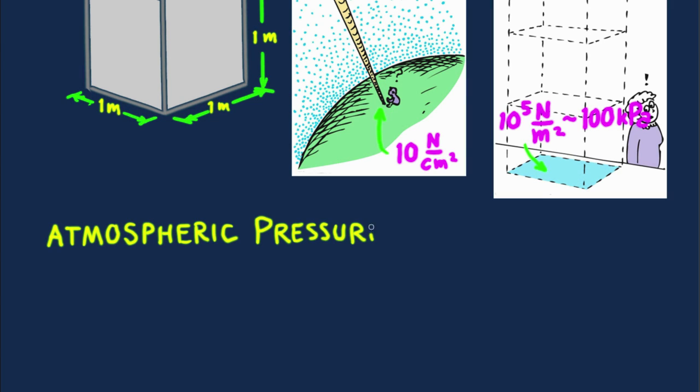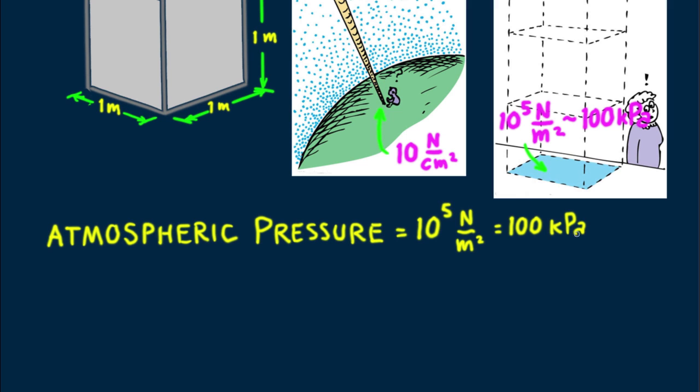We write atmospheric pressure equals 10 to the fifth newtons per square meter, which can be expressed as 100 kilopascals. The average pressure at sea level is often called one atmosphere, abbreviated ATM. In British units, the average atmospheric pressure at sea level is 14.7 pounds per square inch. So we see that the weight of air bearing down on a 1 square meter surface at sea level is about 10 to the fifth newtons, producing an atmospheric pressure of 10 to the fifth newtons per square meter. To be more exact, the average atmospheric pressure at sea level is 101.3 kilopascals.